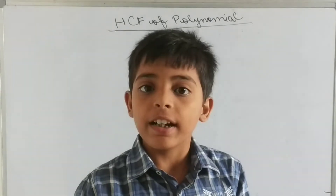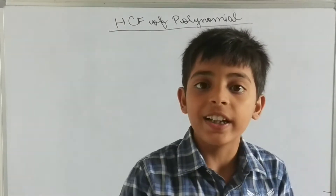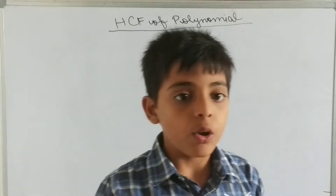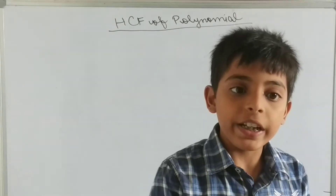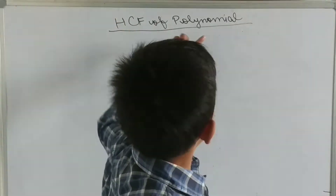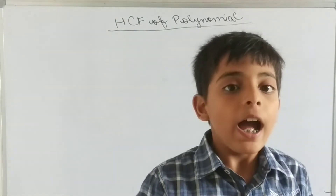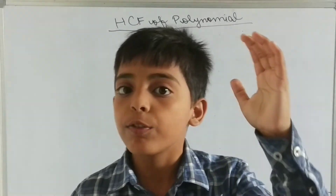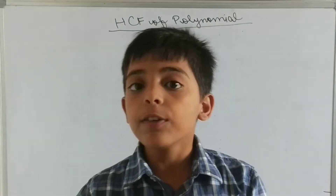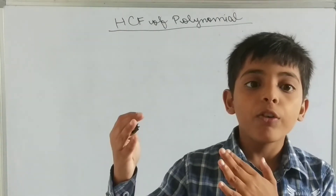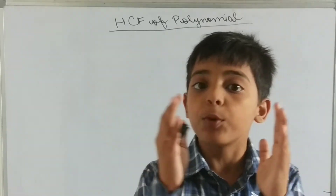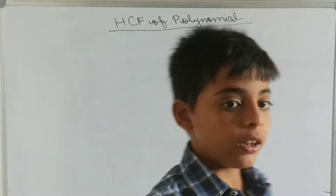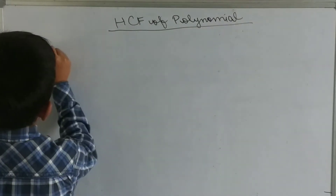First we will understand the concept of how we can find the HCF of a polynomial. Since we know that a polynomial is the combination of a constant and a variable, we first have to find the HCF of the constant part and then the HCF of the variable part. The product of both will be the HCF of the polynomial.